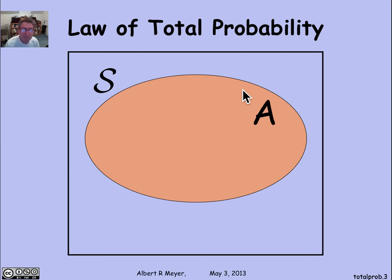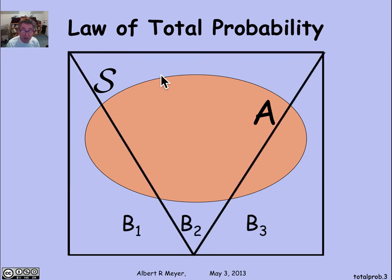Now suppose that I have three sets B₁, B₂, and B₃ that partition the sample space. That is, B₁, B₂, and B₃ don't overlap. They're disjoint, and everything is in one of those three sets.